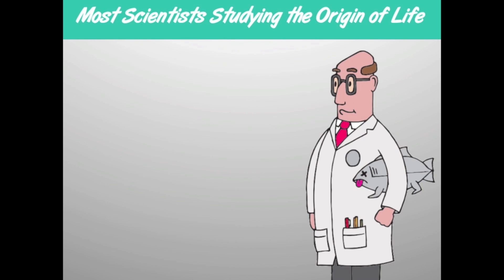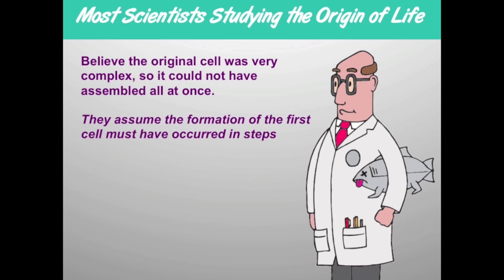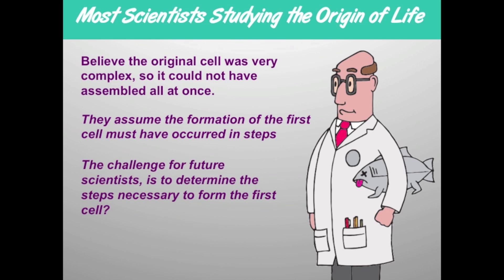Most scientists studying the origin of life realize that the original cell was very complex. It could not have occurred or assembled all at once. Therefore, they speculate that the formation of the first cell must have occurred in steps. The challenge for science is to determine what those steps were in the formation of that first cell.